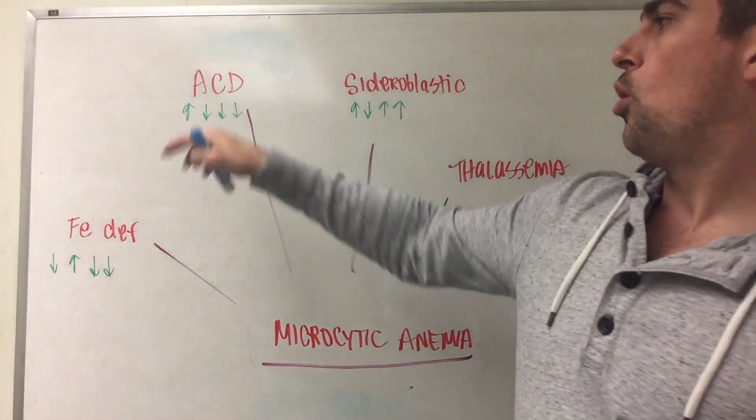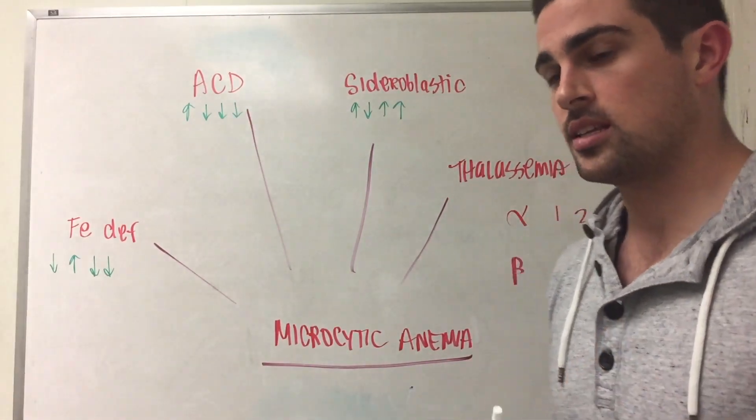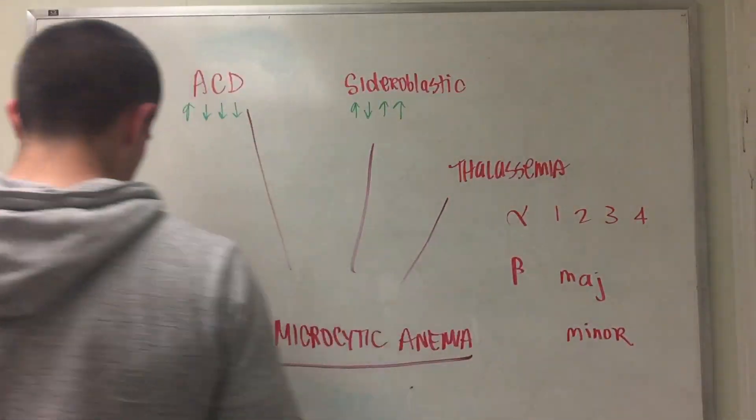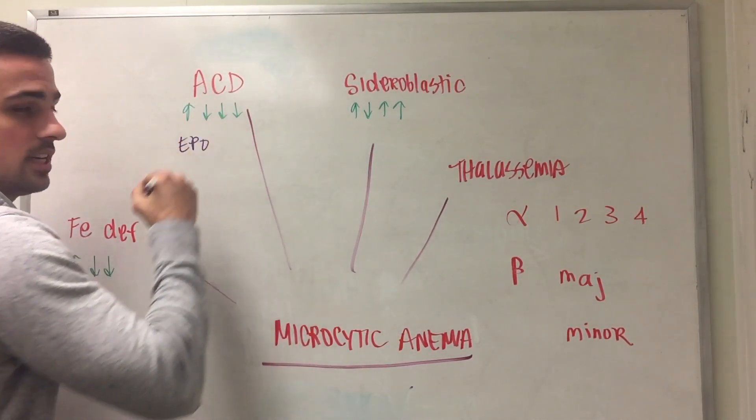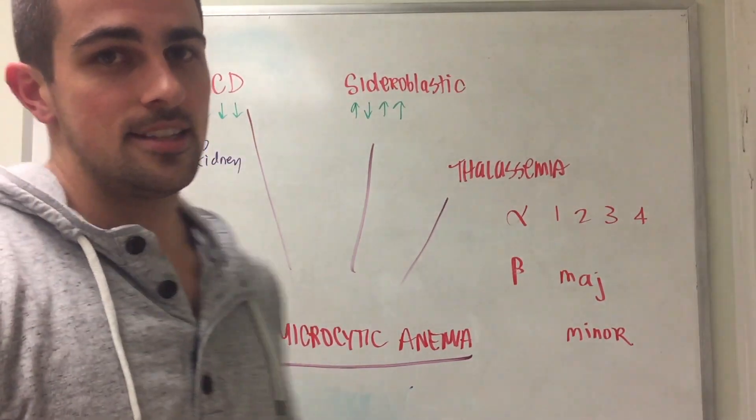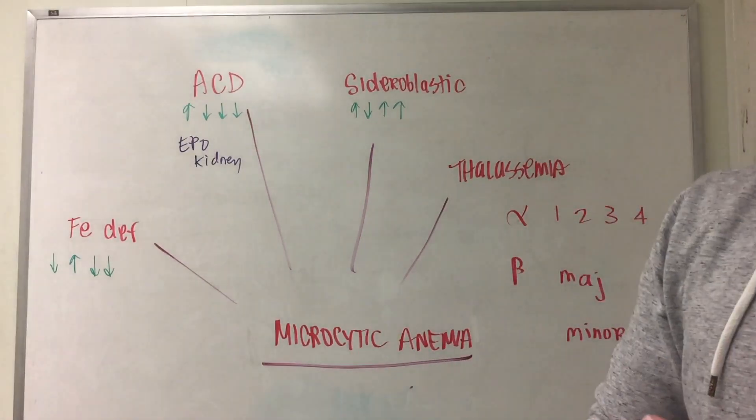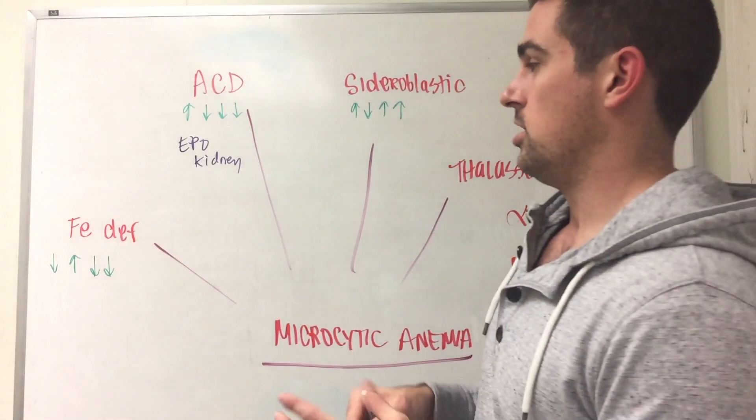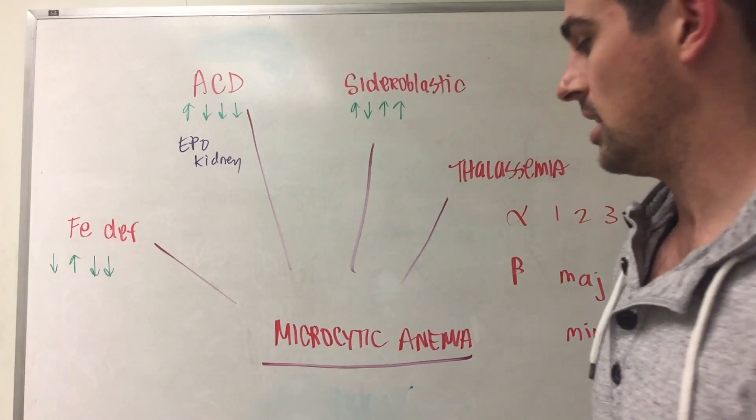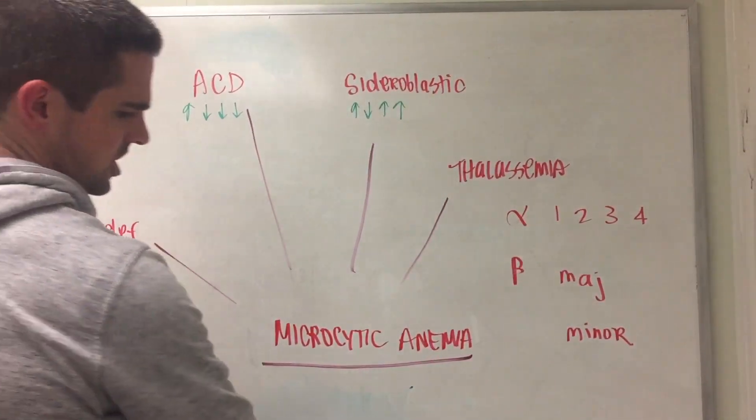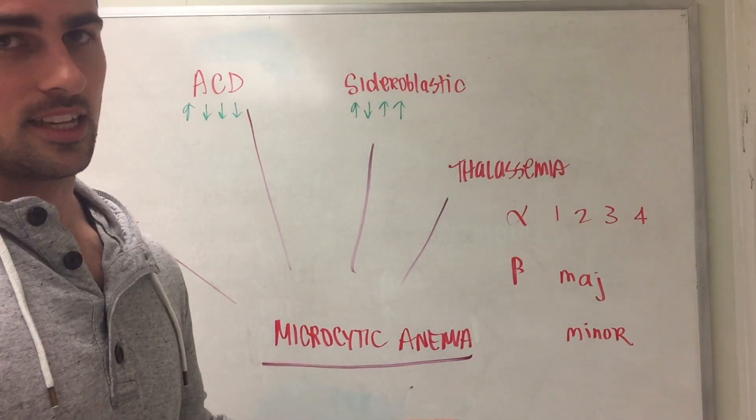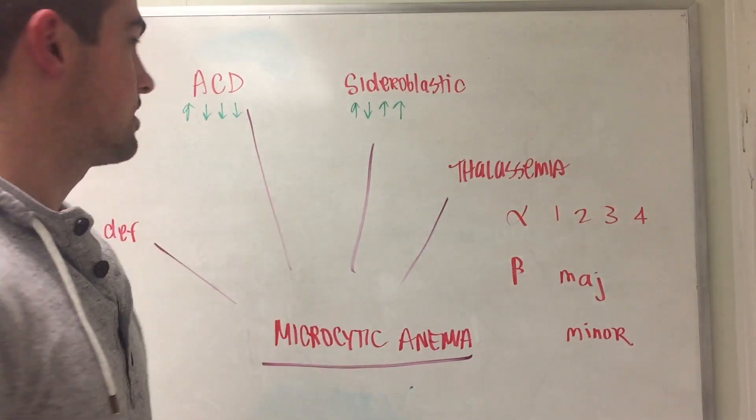So they stop production of transferrin and lock all the iron inside the cells. What you can give to people who have ACD is erythropoietin, EPO. EPO is made in the kidney. Some people who have chronic kidney disease won't be making tons of EPO, so you need to give them exogenous EPO because the iron is there, they're just not able to make the red blood cells. Not very many questions on ACD. If you see disease state, maybe CBC value of 76 and rheumatoid arthritis, maybe call it ACD.